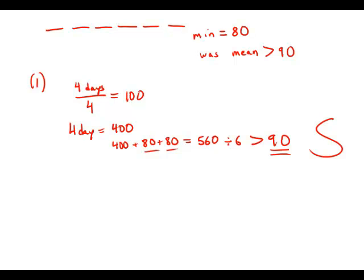Now forget about statement number one, let's focus on statement number two. Statement number two tells us that for the three days with the smallest number of people registered, the average for those three days was 85.